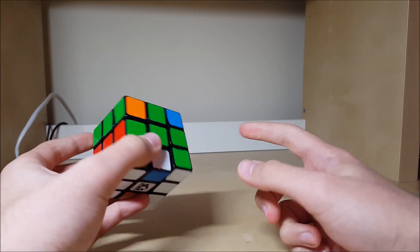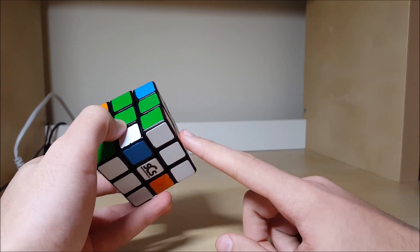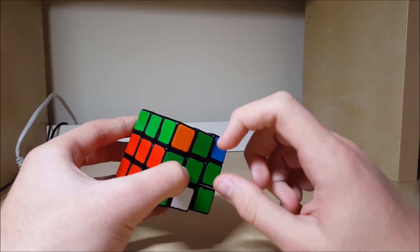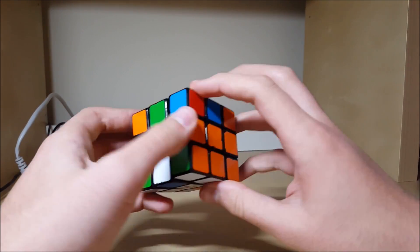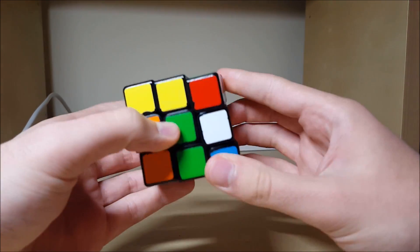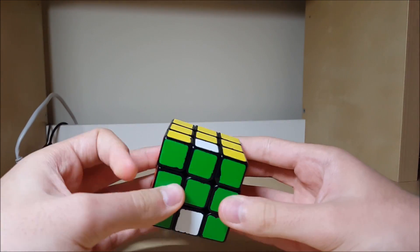And then the second step, or the second part of 2lookCMLL, is permuting them, putting them in the right spot. There are only two of these cases, so this one you switch these two, you do an algorithm, and there, they're solved.